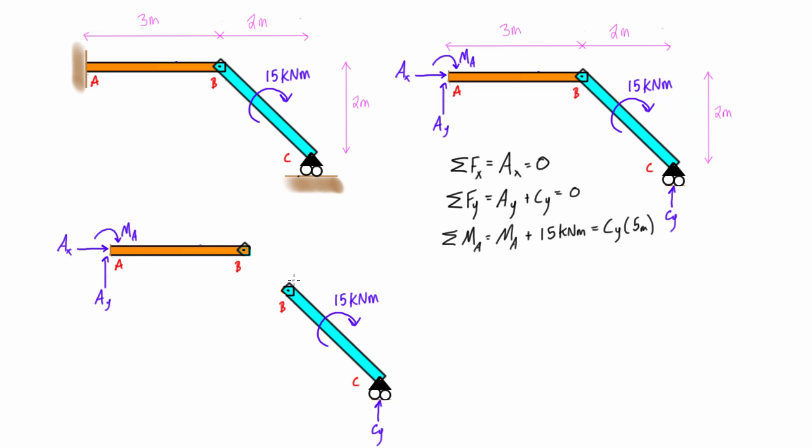So basically the only force that this orange member can exert on this teal member, keeping this teal member in static equilibrium, is just the equal and opposite force to the Cy. So basically there has to be an equal and opposite Cy pointing down here, and then obviously the equal and opposite on that other end, on the other free body diagram at the same point, we would have that Cy.